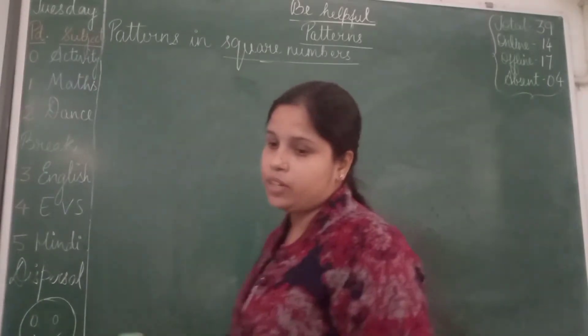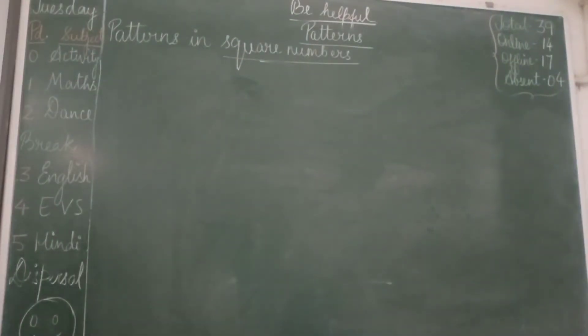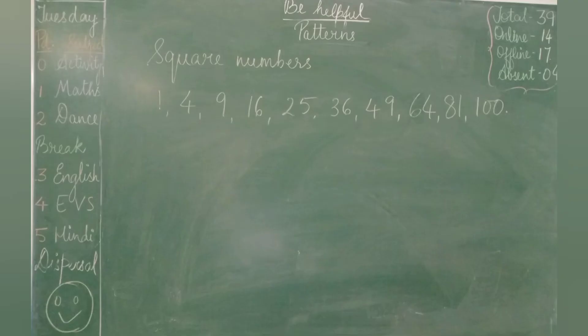Now again we will discuss the other property of square numbers. A very important thing is that, as you can see the square numbers written on the blackboard: 1, 4, 9, 16, 25, 36, 49, 64, 81 and 100. Here you can see the pattern and you can observe that at one's place, the only digit which can come is 0, 1, 4, 5, 6 or 9. At one's place of every square number, you can get only these digits.